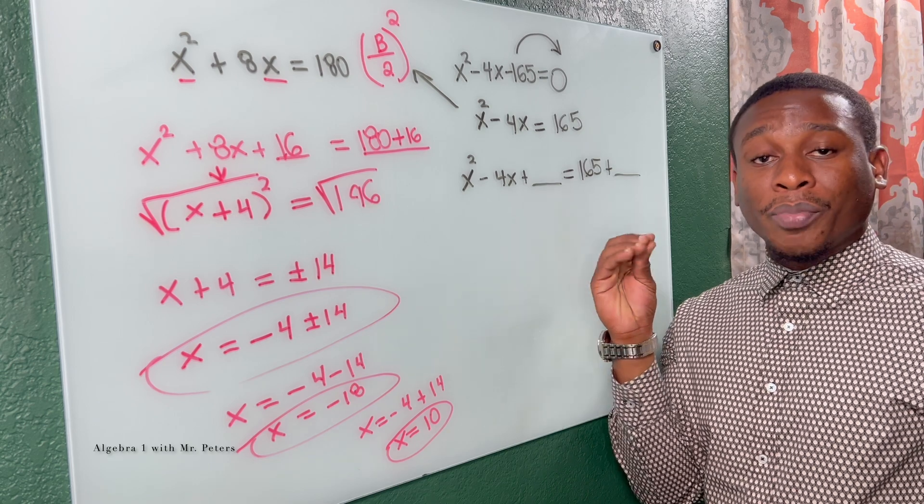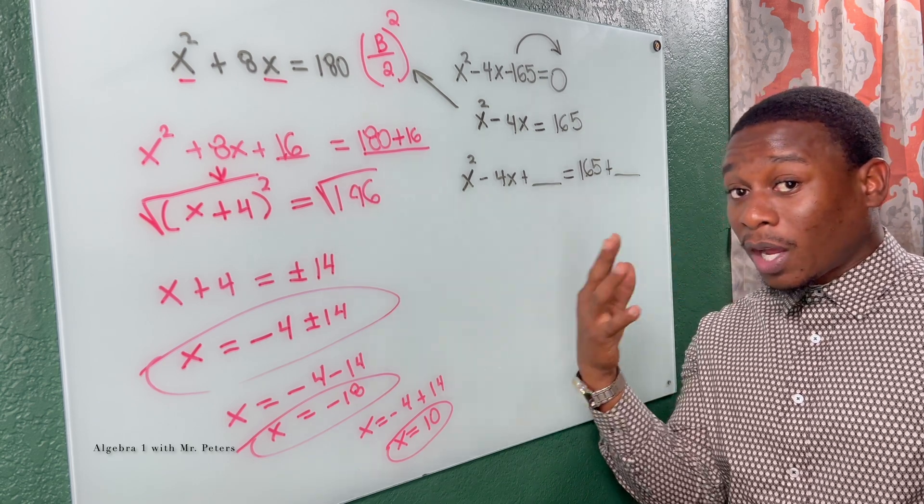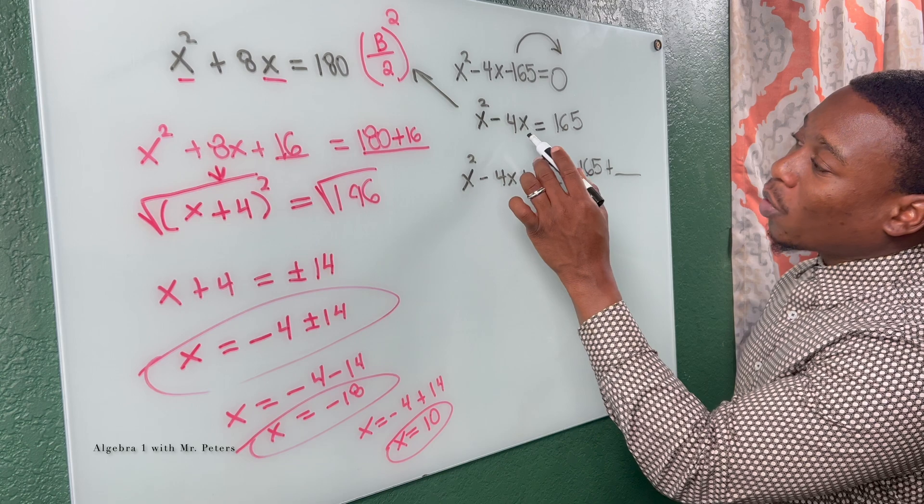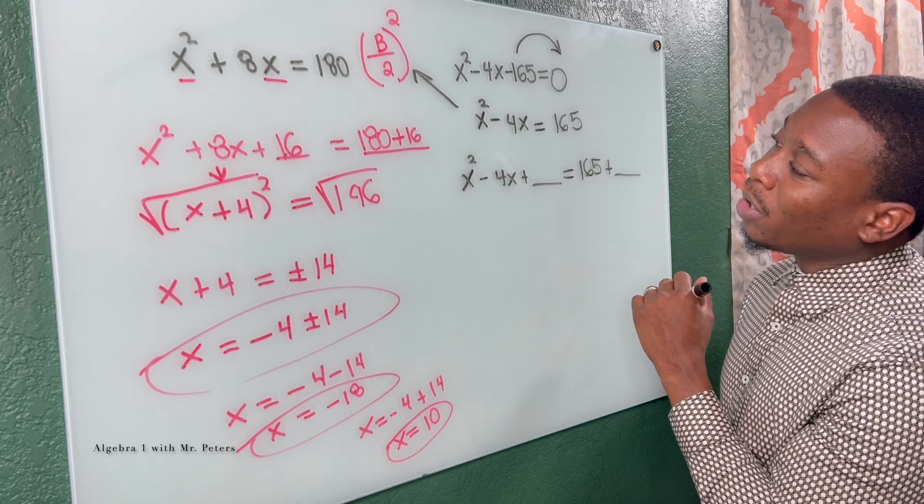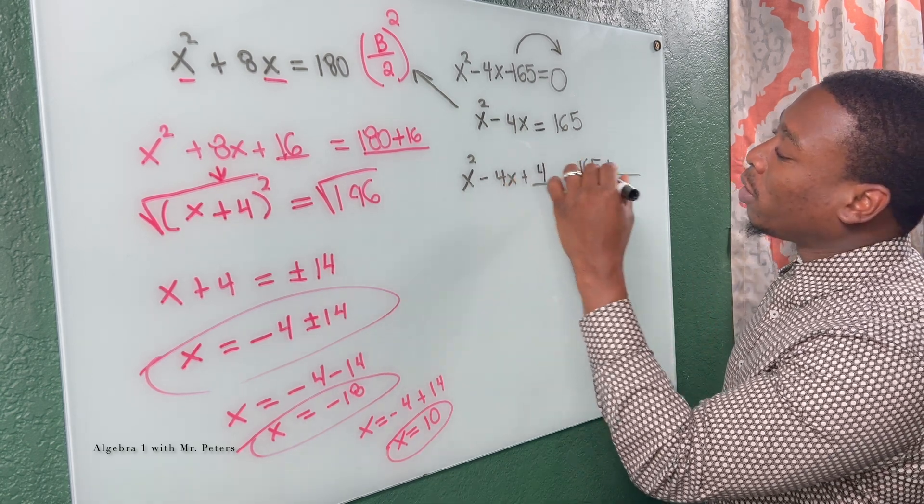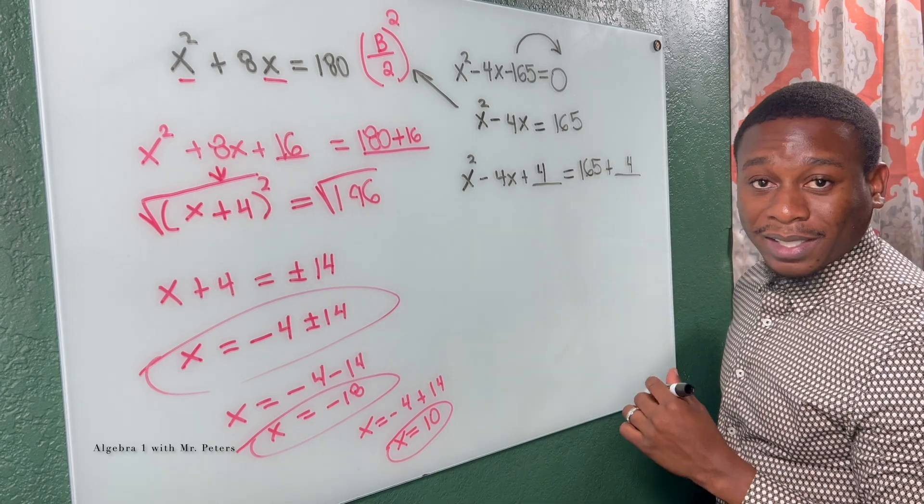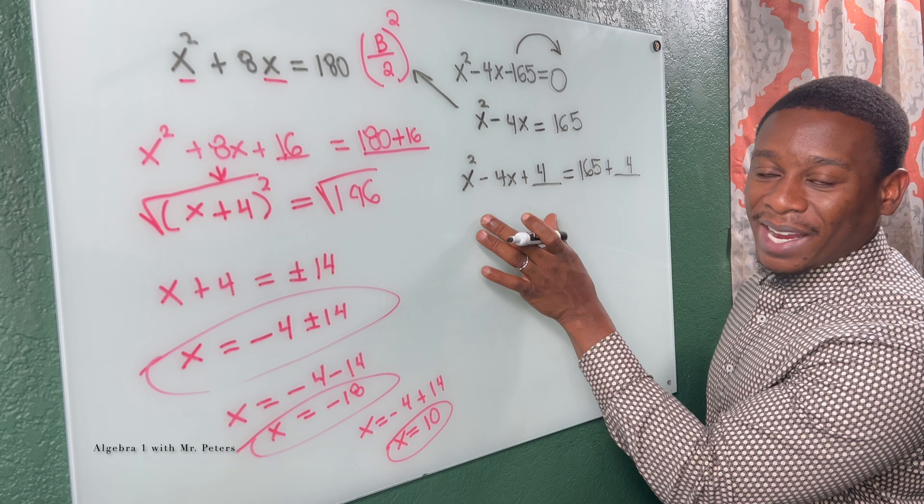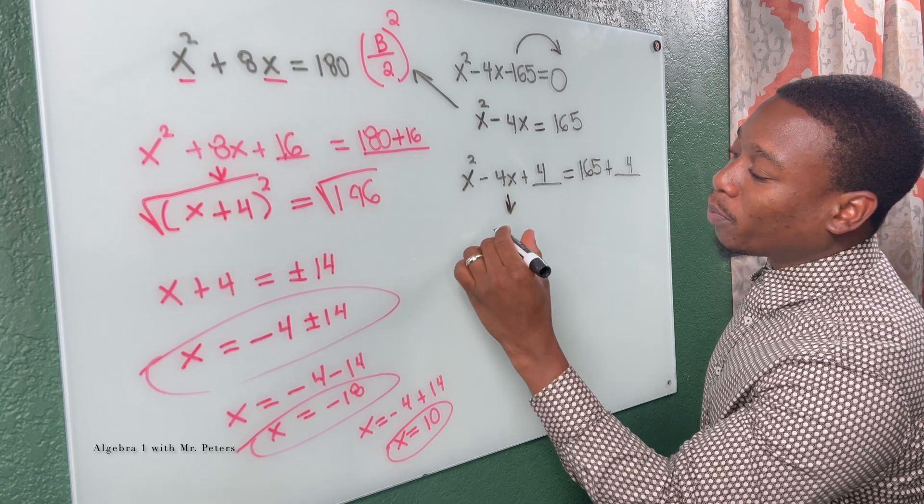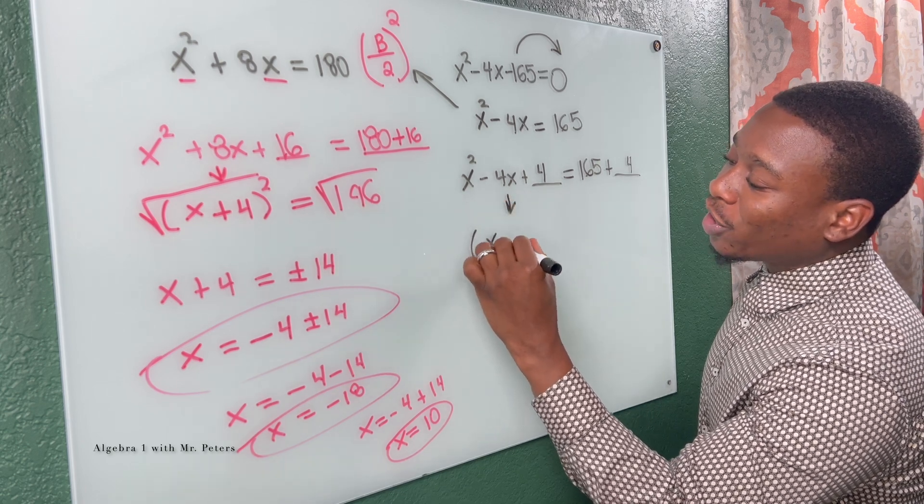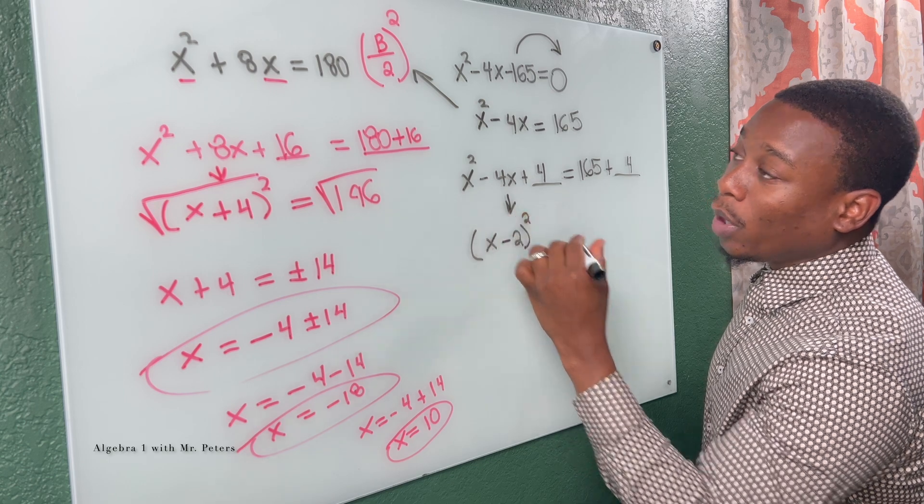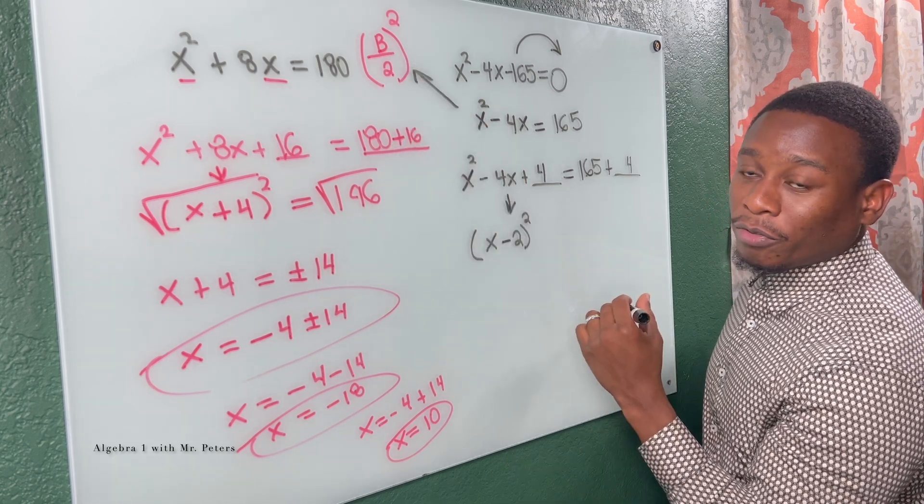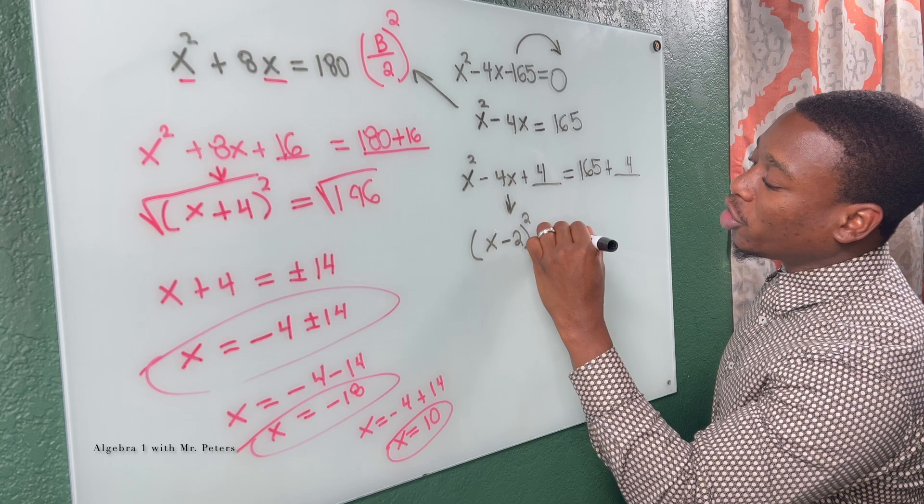So when I rewrite this, we have X squared minus 4X plus whatever we complete the square with, and we have to make sure we add it on the other side. Family, you don't have to put this, but this is just to let you guys visualize what we're doing. So half of four is two, two squared is four. So we're gonna add four on both sides. Now we break this down to its binomial, that binomial that we multiply by itself. That is just X minus two squared, and that's equal to 169.